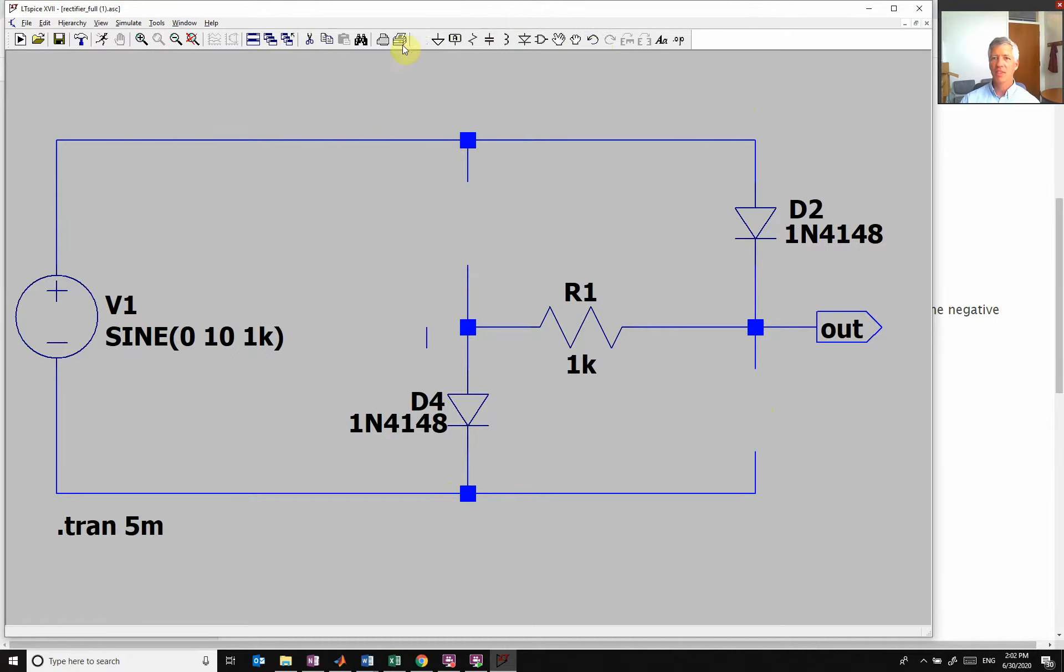And then when my voltage is negative, then my current is flowing this way. And you see now, so for the first time it was flowing from here to here. Now it's flowing backwards from here to here. So you see it's flowing opposite directions through this resistor, which is going to cause it to flip around.